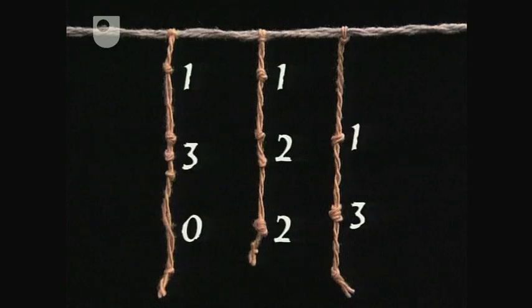The units, tens, and hundreds are lined up across the cords, and zeros are represented by the absence of a knot.